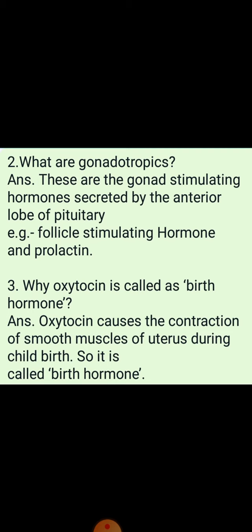Question number 3: Why is oxytocin called the birth hormone? Oxytocin causes the contraction of smooth muscles of the uterus during childbirth. This is the reason why oxytocin is known as the birth hormone.